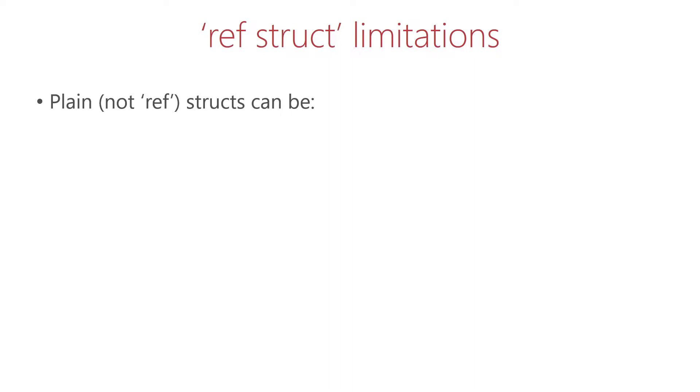With a simple struct without the ref keyword, you can do basically everything that you can do with a class with very few exceptions. There are differences around inheritance, but you can create a normal struct basically everywhere: it can be a local variable, a field within a class or another struct, a generic parameter, and so on.